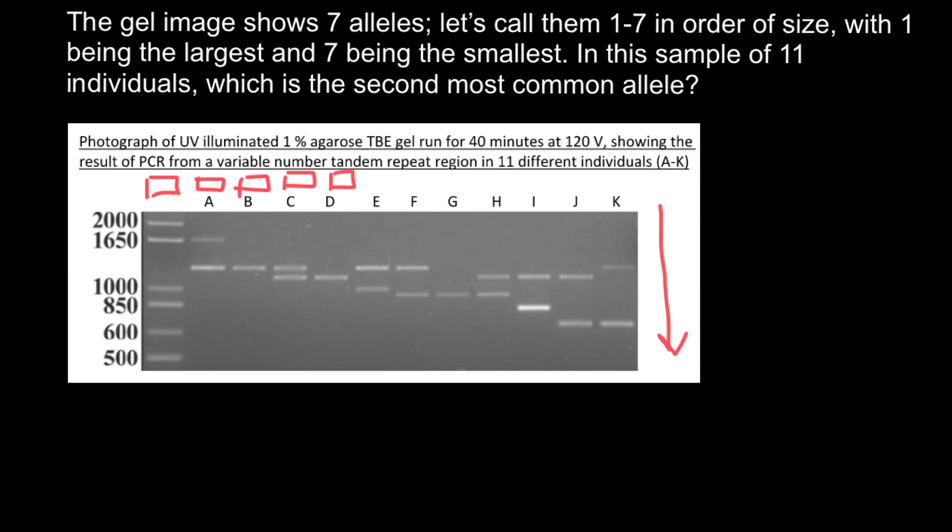There are six variants of sizes starting from 2000 and ending with 500 bases. So now we can use this ladder as a reference to find the size of our alleles. This allele would be the heaviest. It traveled the smallest distance.